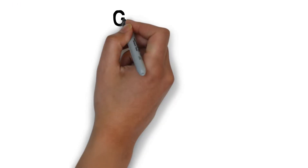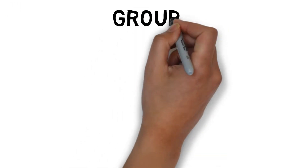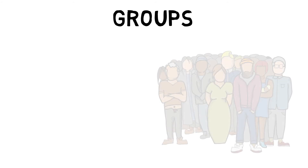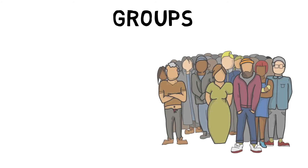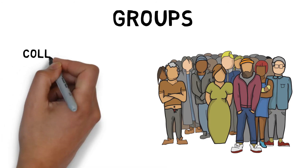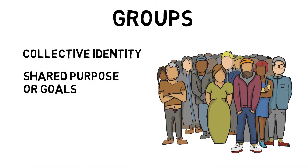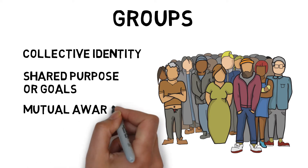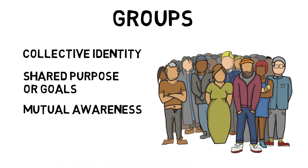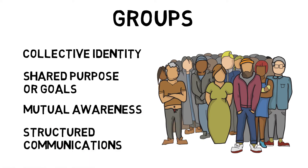Groups are two or more people that interact and influence each other. A group will commonly have a collective identity, a shared purpose or goals, mutual awareness, and structured communications, such as a home crowd or a sports team.